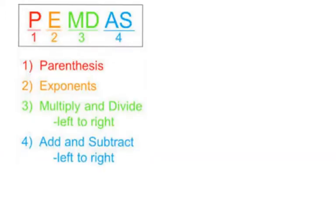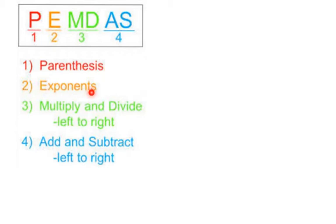As a refresher on order of operations, we use the phrase 'Please Excuse My Dear Aunt Sally,' or PEMDAS. P is for parentheses — do anything inside parentheses first. E is for exponents — do any exponents next. But when you get to multiply and divide, it is not multiplication then division separately; you do multiplication and division together left to right, like you read.